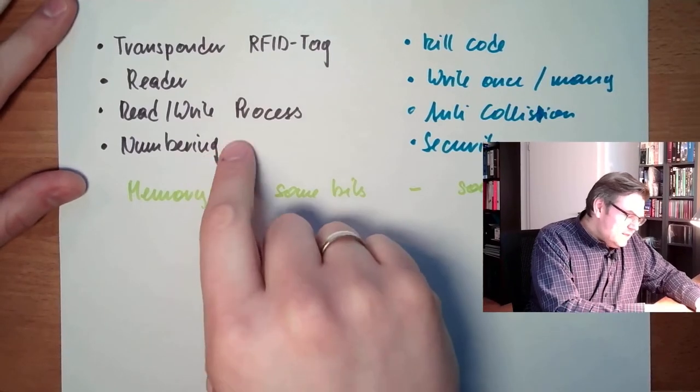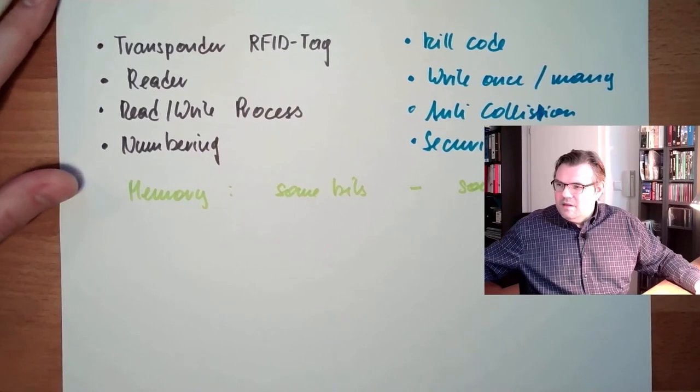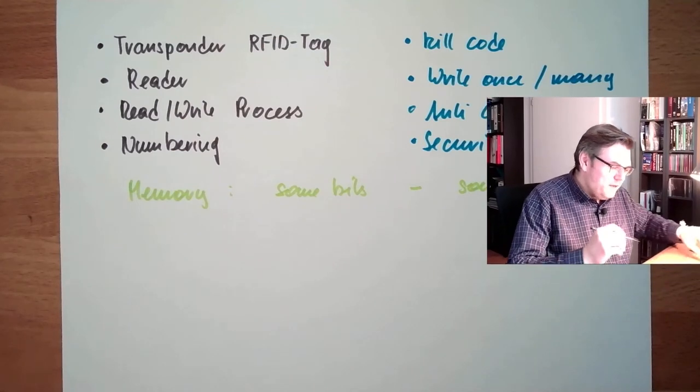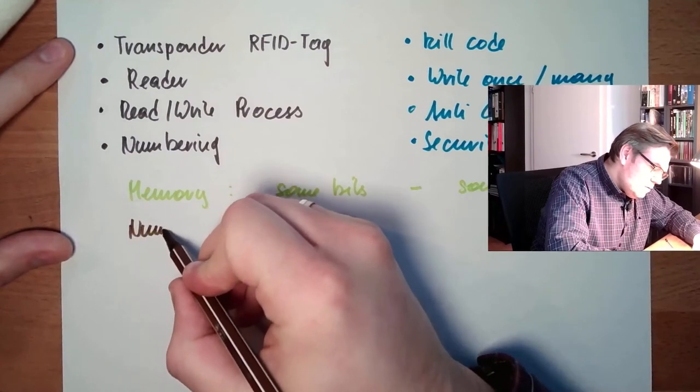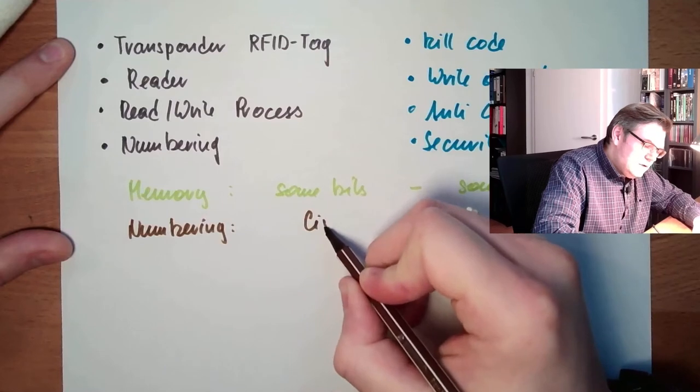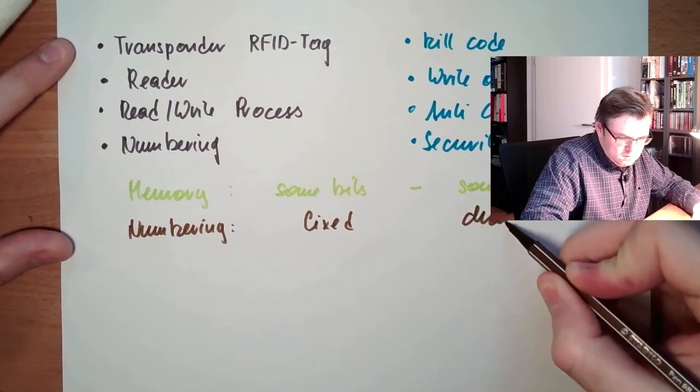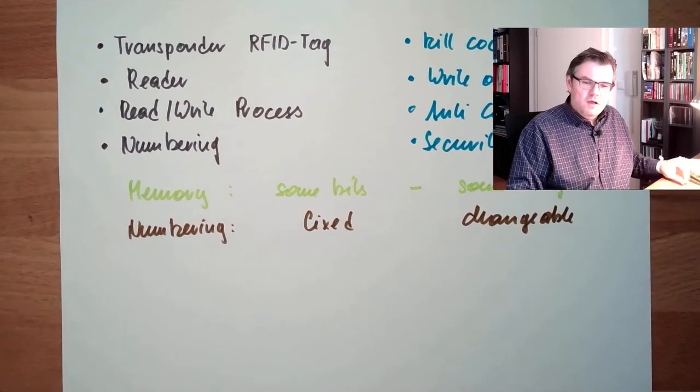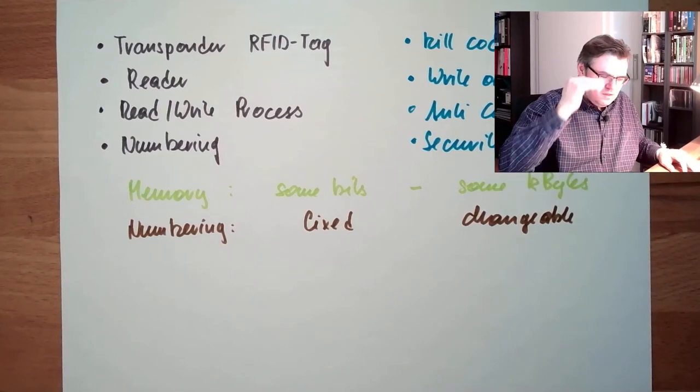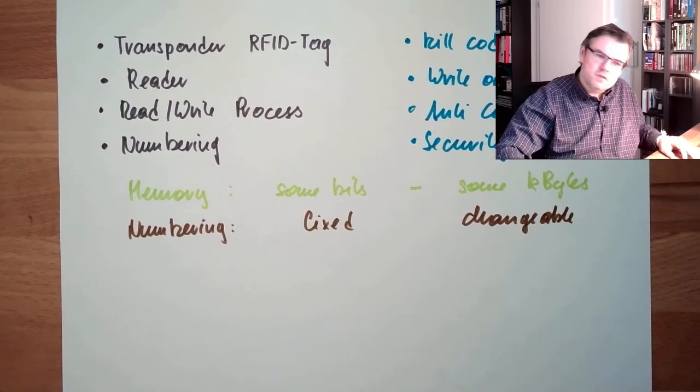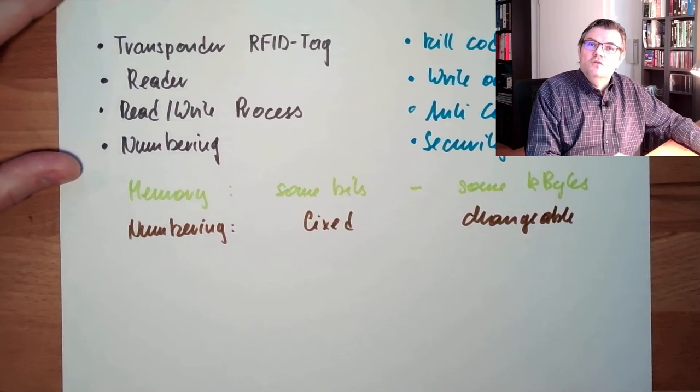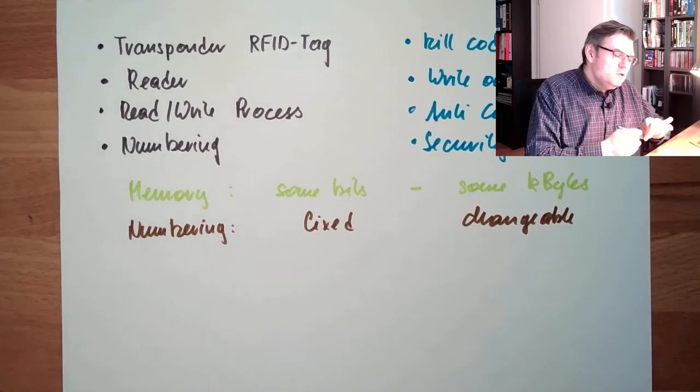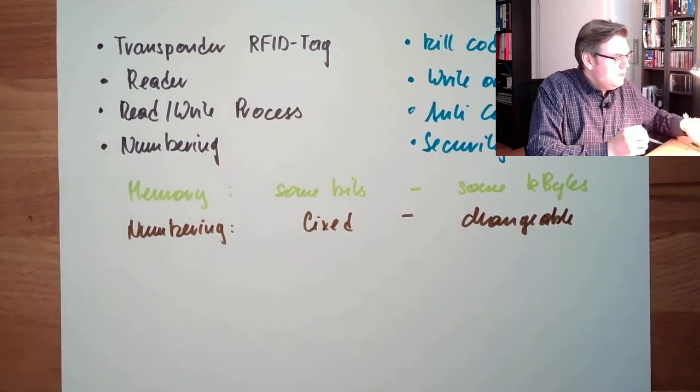And this numbering, I said. This numbering is basically, there are the possibilities that numbering is either fixed or changeable. At the older systems, they were usually fixed. During manufacturing process, this tag got this number fixed. No possibility to change it. Newer ones can be changed. For instance, holding charge information or something like this. So fixed and changeable numbering systems is one possibility to distinguish between RFID systems.